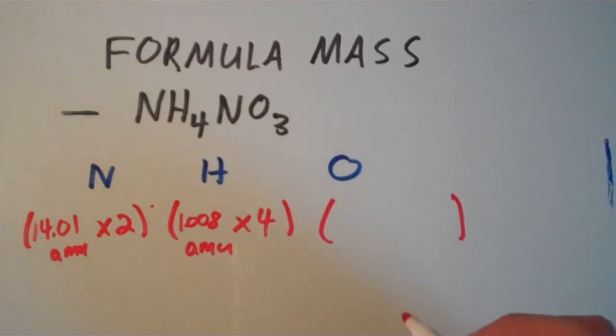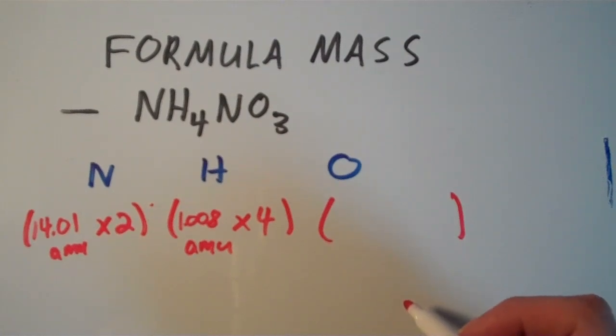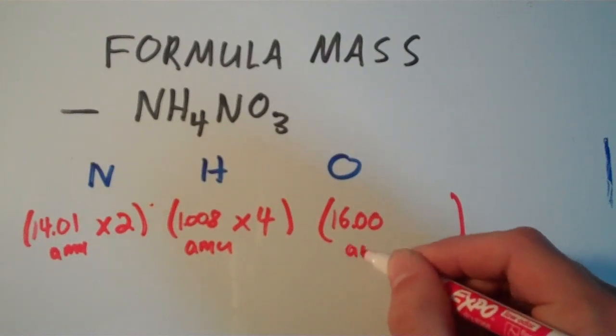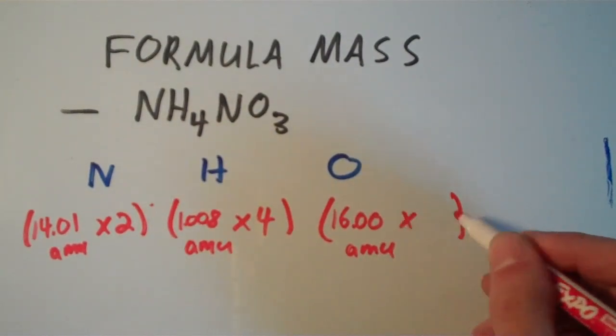And for the oxygen, the atomic mass of oxygen, and these atomic masses are all from the periodic table, by the way, so that's where I'm getting them from. The atomic mass of oxygen is 16.00 AMU, and there are three of them.